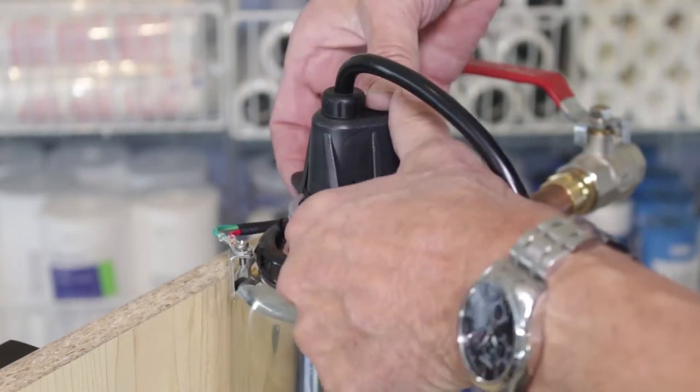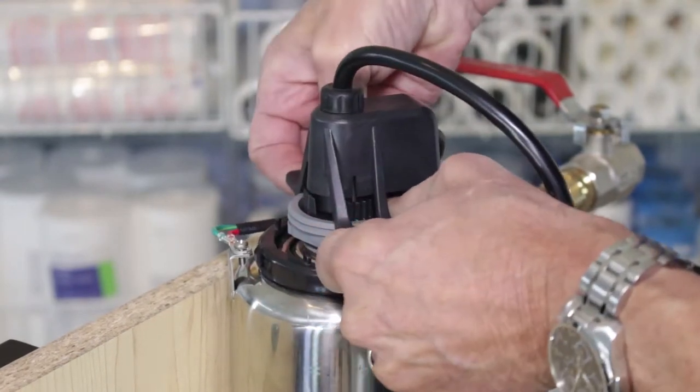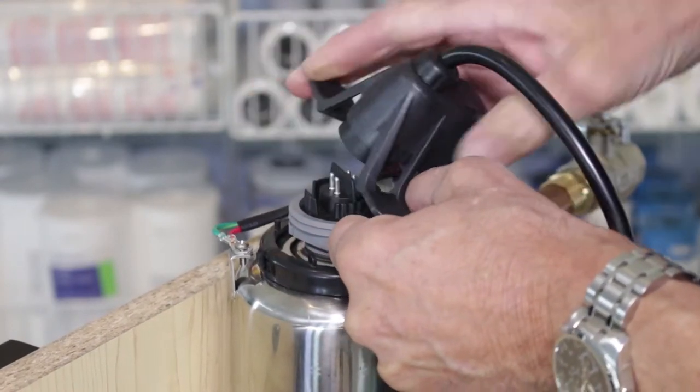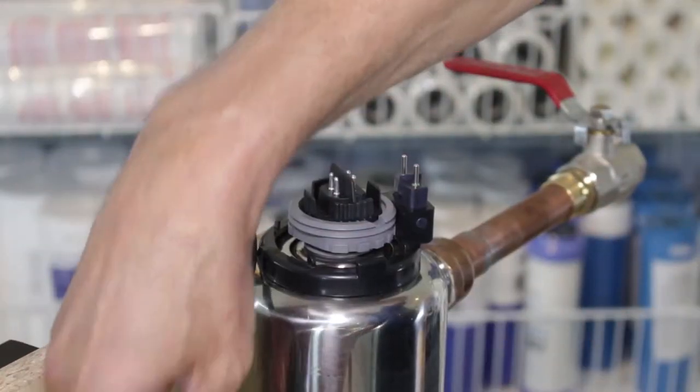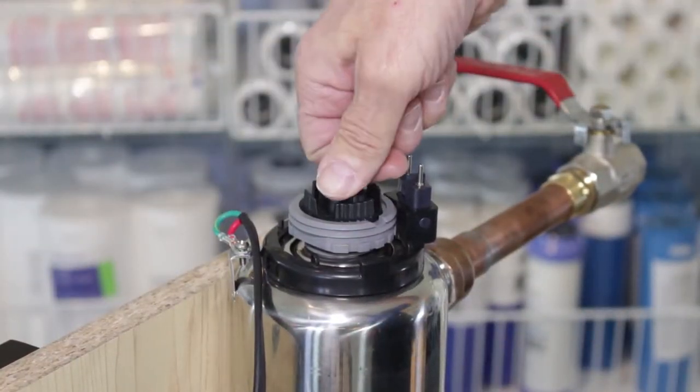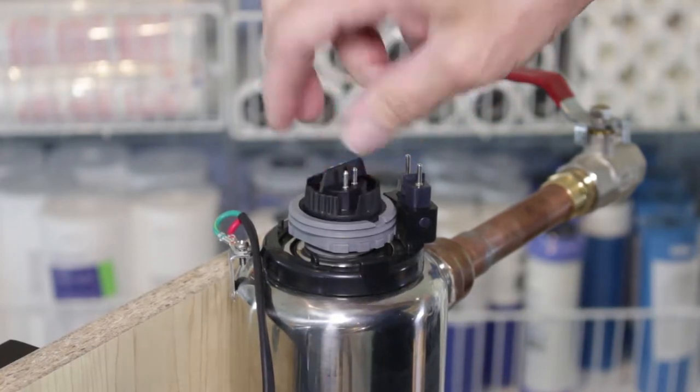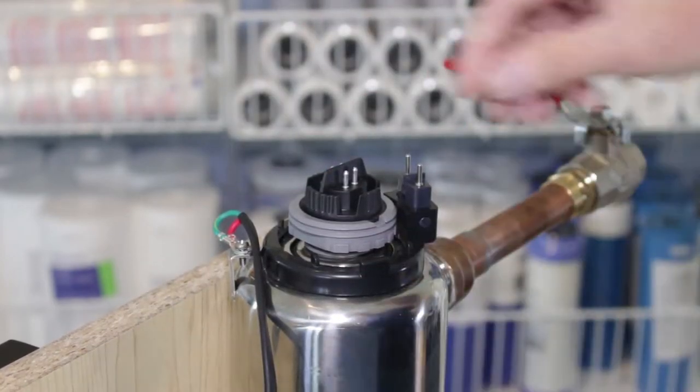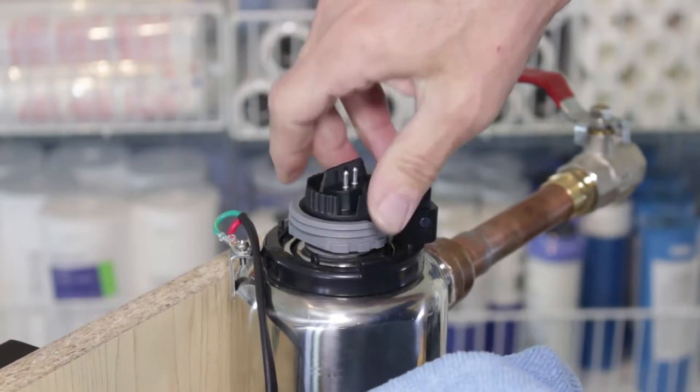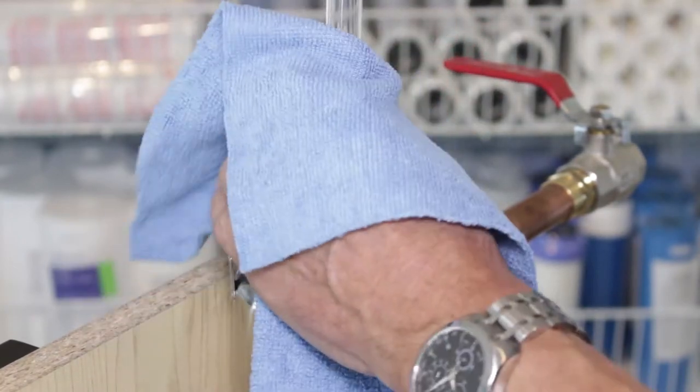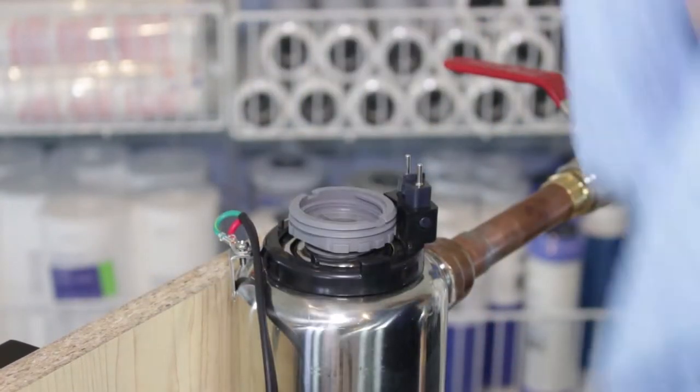After it's cooled, you just pull up on these two tabs to release it. Pull the cap off, and then you unscrew the lamp. I would suggest you handle the lamp and the sleeve with a clean cloth. Pull that up, grab it, and pull it out.